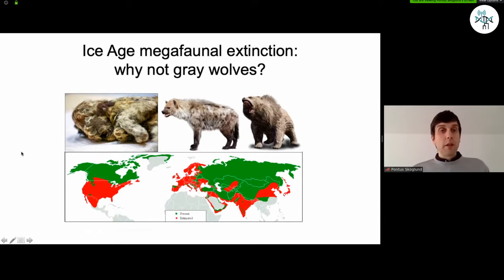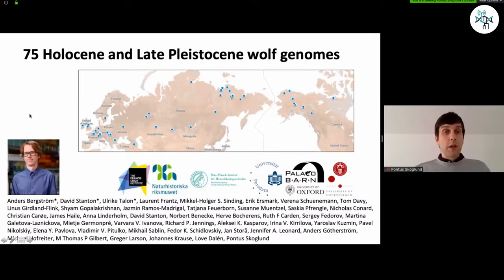So in this very related study where, again, Anders Bergström has done all the analysis I'm going to show here, and we've worked with a really large consortium, including the Natural History Museum in Stockholm, the Max Planck in Jena, Tübingen, University of Potsdam, Oxford, and University of Copenhagen. And to collect this data, it's really a group effort of 75 ancient whole genomes of about median coverage 1x from ancient wolves.